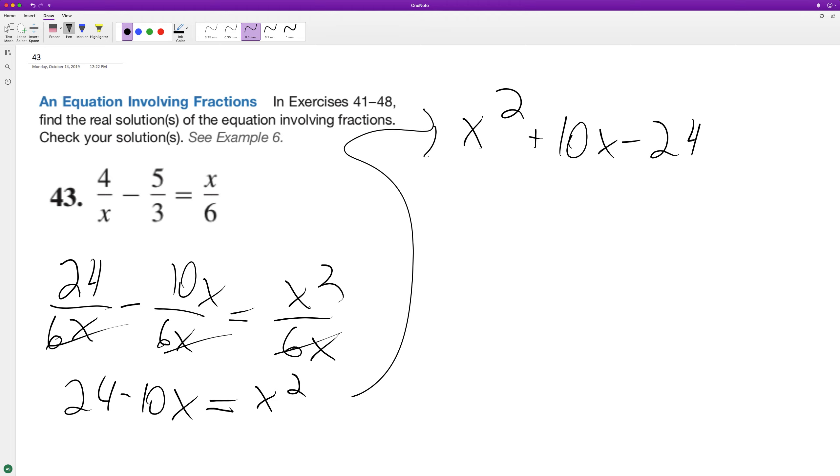Looking here, it looks like we can do an x plus 12 and an x minus 2, and that gives us x is equal to negative 12 and 2. But we don't want to just say that's the solution, we want to test it.